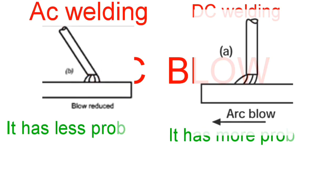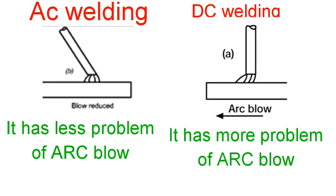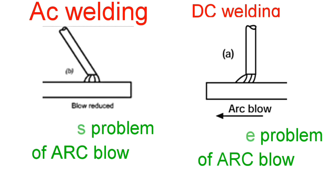Arc Blow: AC welding has less problem of arc blow, whereas DC welding has more problem of arc blow.